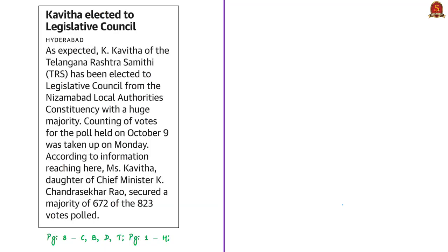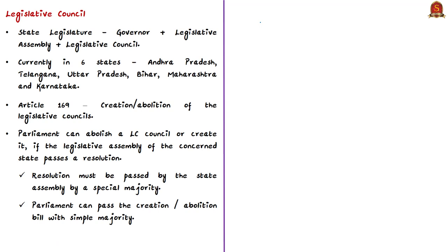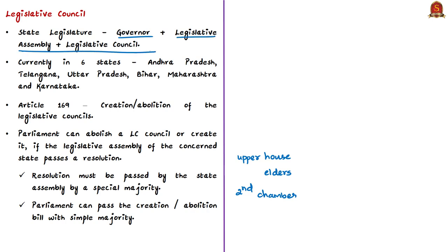The next news article talks about the legislative council. In India, we do not have a uniform organizational structure at the level of state legislatures — most states have only the state legislative assembly, while some have both the legislative assembly and the legislative council. The state legislative council is also called the upper house in states, the house of elders, and the second chamber. As per Article 168 of the Indian Constitution, the state legislature includes the governor along with the chamber or chambers.